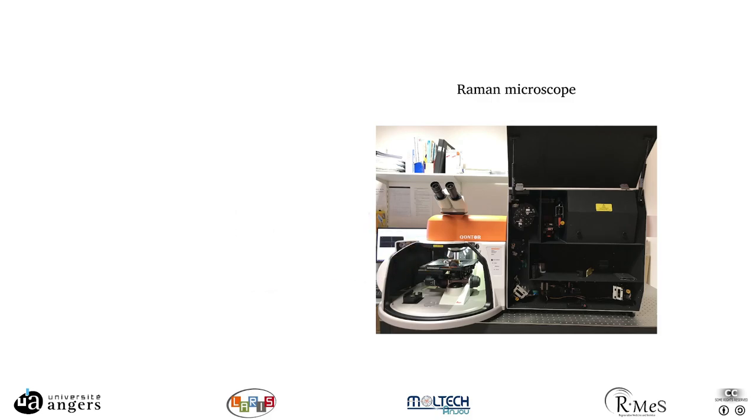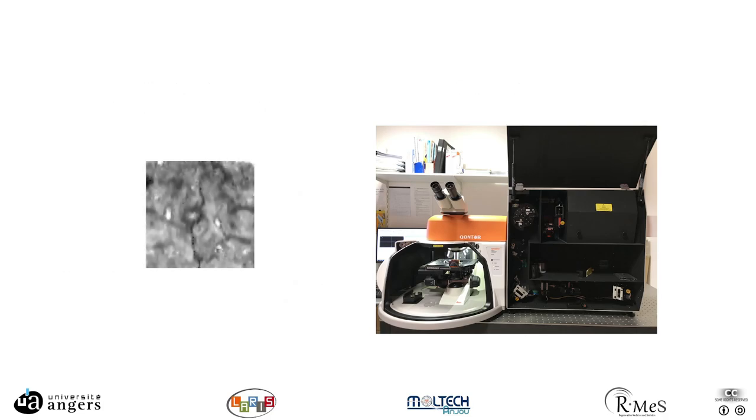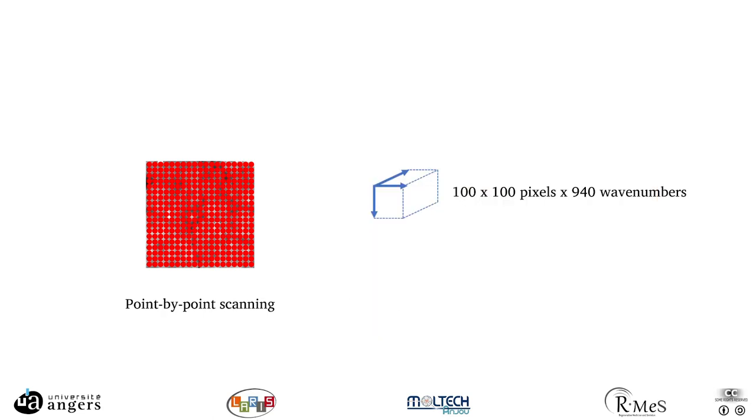With the Raman microscope you obtain a cartography of the spectrum, so for each pixel you get one spectrum. But this sample is scanned point by point which leads to very long acquisition time. For example, for an image of 100 by 100 pixels you need at least 42 hours to be acquired.